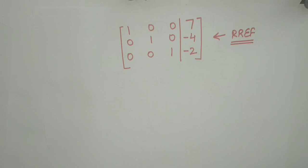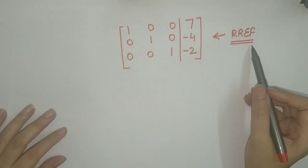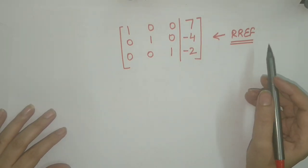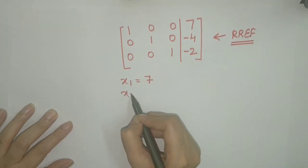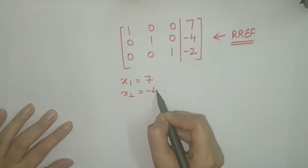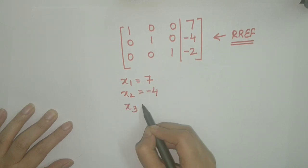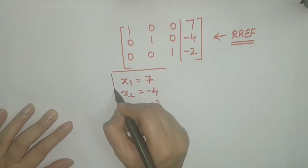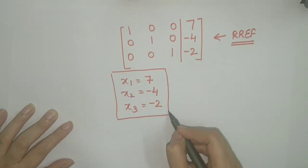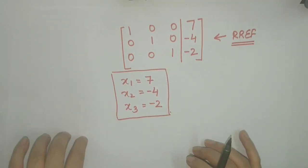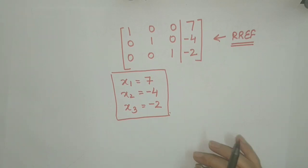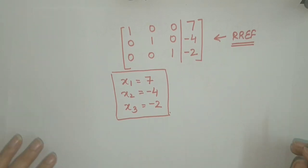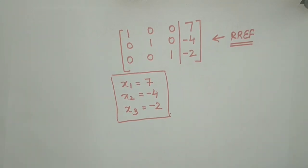The corresponding linear system for this reduced row echelon form is x1 = 7, x2 = −4, and x3 = −2. Hence this is the solution for the given system. It can be seen that the solution remains the same irrespective of which method we choose to perform. Thank you.